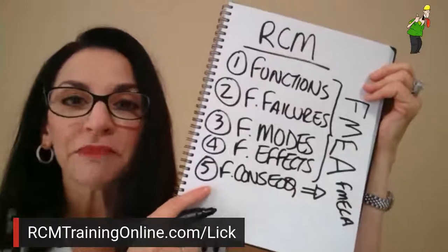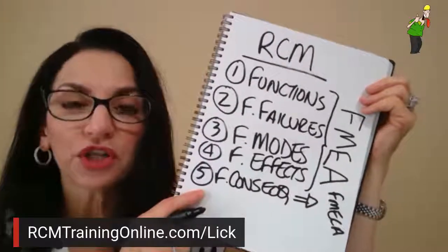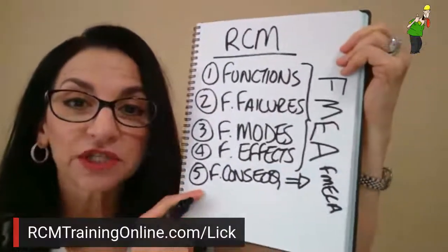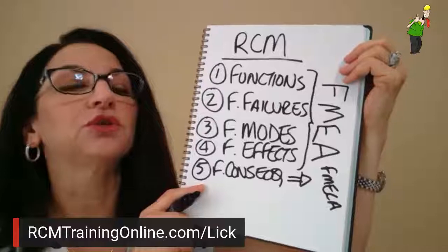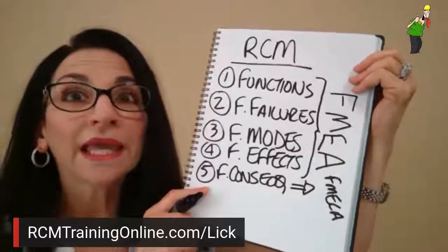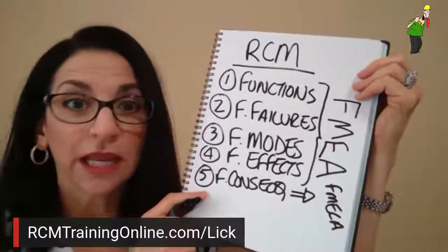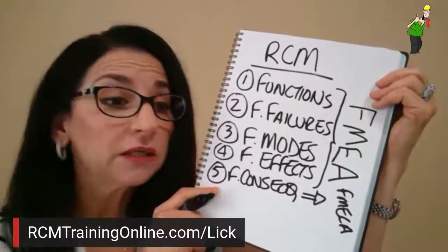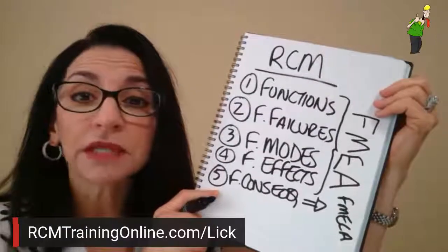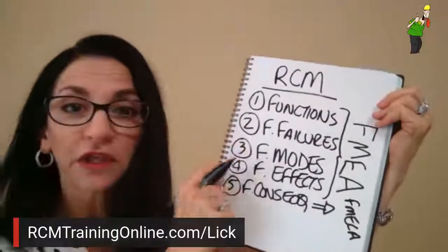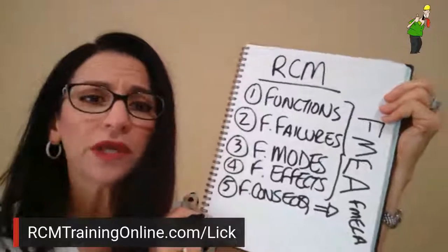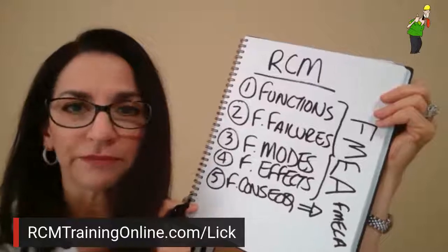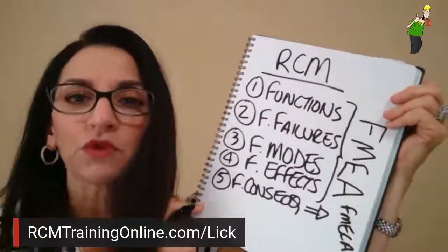Once you do your FMEA, you put it through the guts of the RCM analysis — the RCM decision diagram. That's when you decide: am I going to do preventive maintenance? Am I going to do condition-based maintenance? Or am I going to apply a default strategy? That includes deciding 'no scheduled maintenance' for certain failure modes. We don't do something for every failure mode — there are tons of failure modes that we simply run to failure.